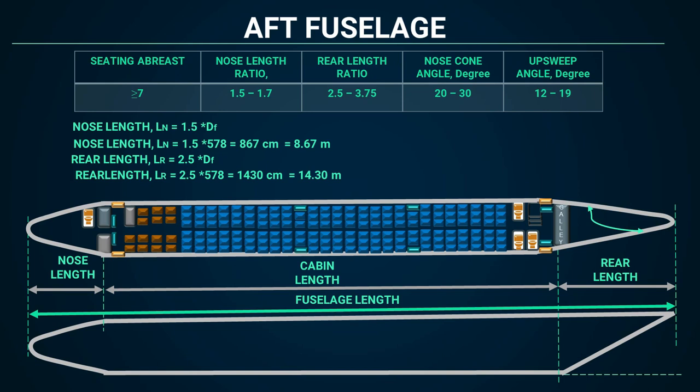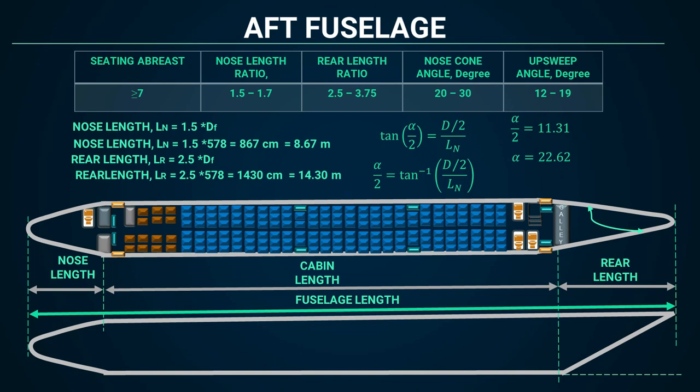One more consideration is the nose cone angle, denoted as alpha. Taking the geometric properties of this triangle formed by the diameter and the nose length, we need to find the semi nose cone angle. Using the formula, we can find the semi nose cone angle, and from there the total nose cone angle comes to 22.62 degrees. If you see the range, it is lying within the proper limit.